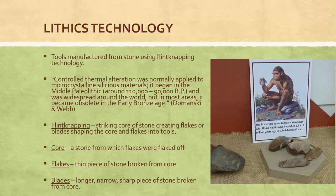The technology of flint knapping is striking the core of a stone, creating flakes or blades, and shaping the core and flakes into tools. The core is a stone from which flakes are removed. Flakes are the thin pieces of stone broken from the core, while blades are longer, narrow, sharp pieces of stone broken from the core.